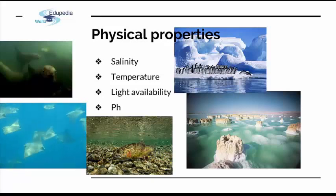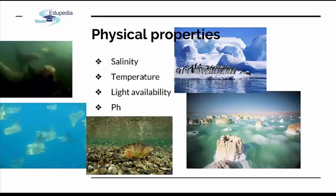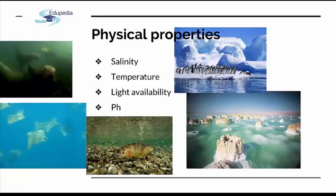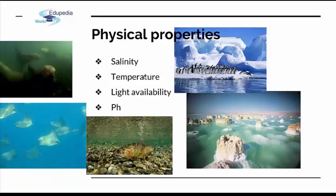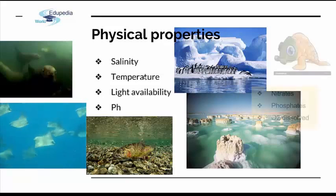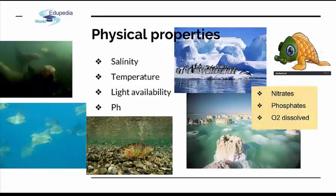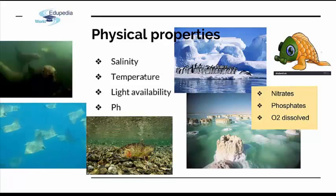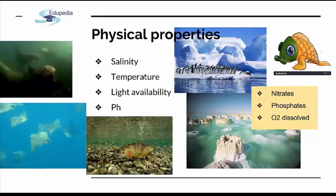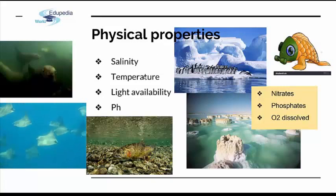Then we talk about pH, which would be the acidity of the surrounding. pH is actually determined by certain chemicals dissolved in the water. Different species are differently adapted to different pH levels and have developed specific strategies to cope with it. Next to these physical and chemical properties, we can also talk about nitrates, phosphates, and oxygen dissolved in the water, which would definitely be one of the most important specifics of the water in determining what kind of biodiversity will develop.